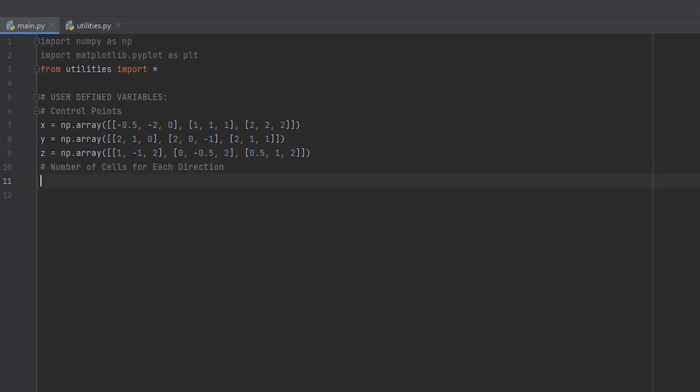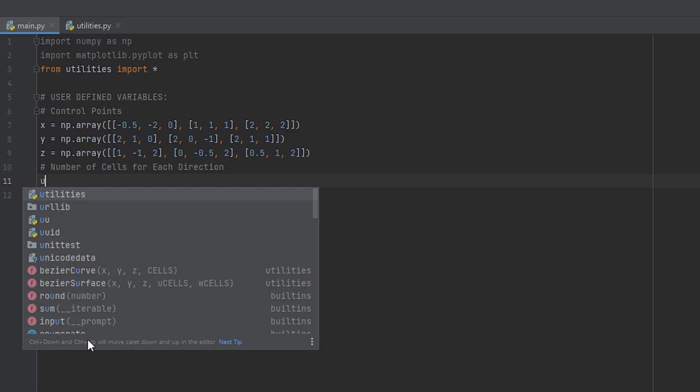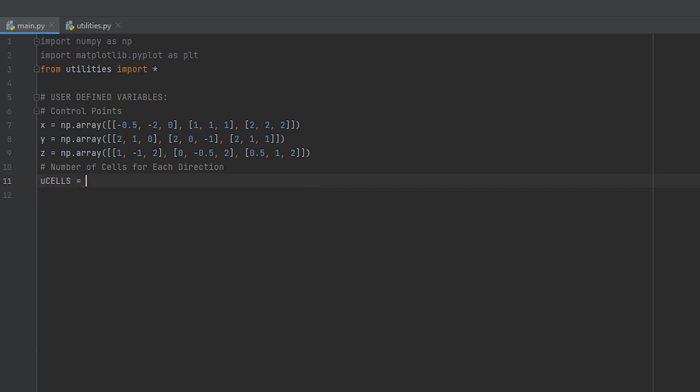Next, we specify the number of cells we will break the surface into. We have two directions. So we specify cells for direction U and direction W. They don't need to be the same value. The two directions can have different number of cells within them.